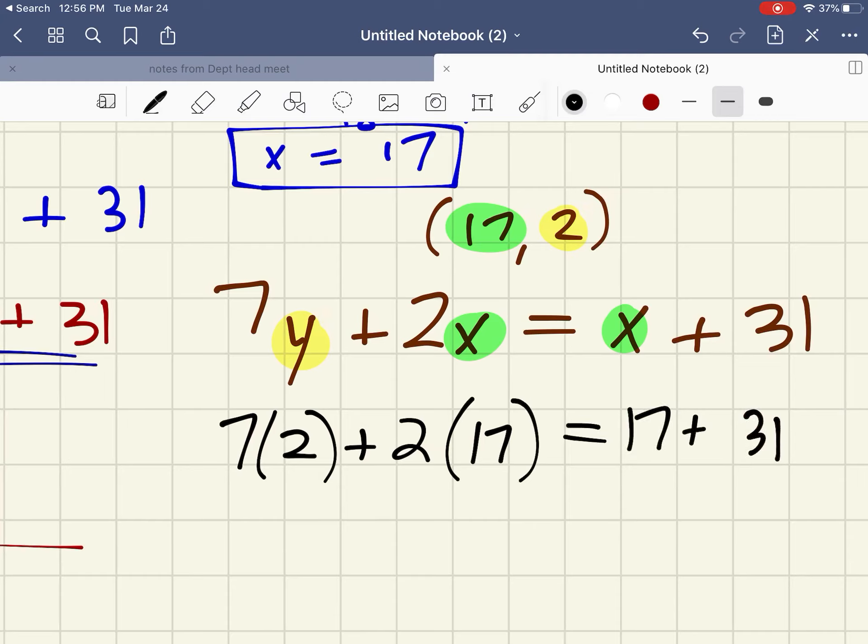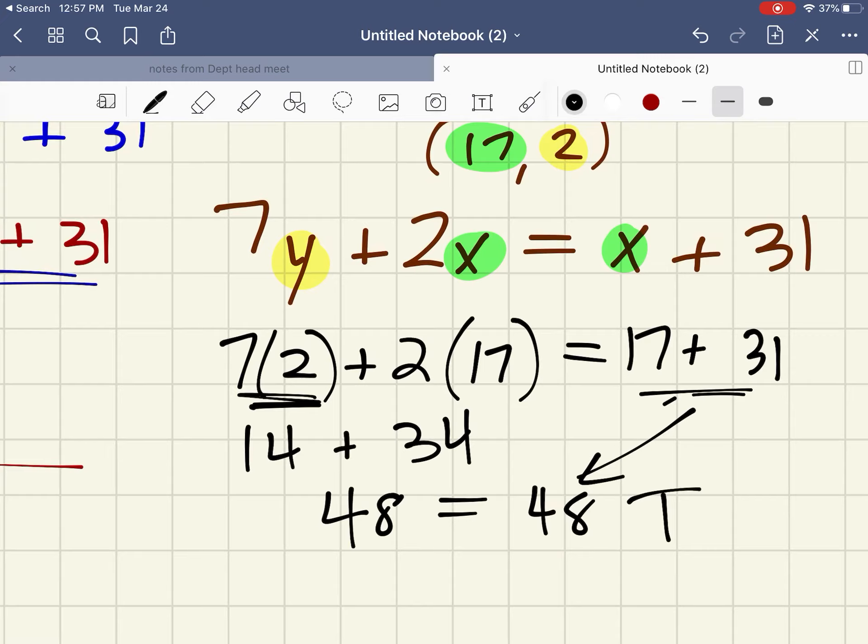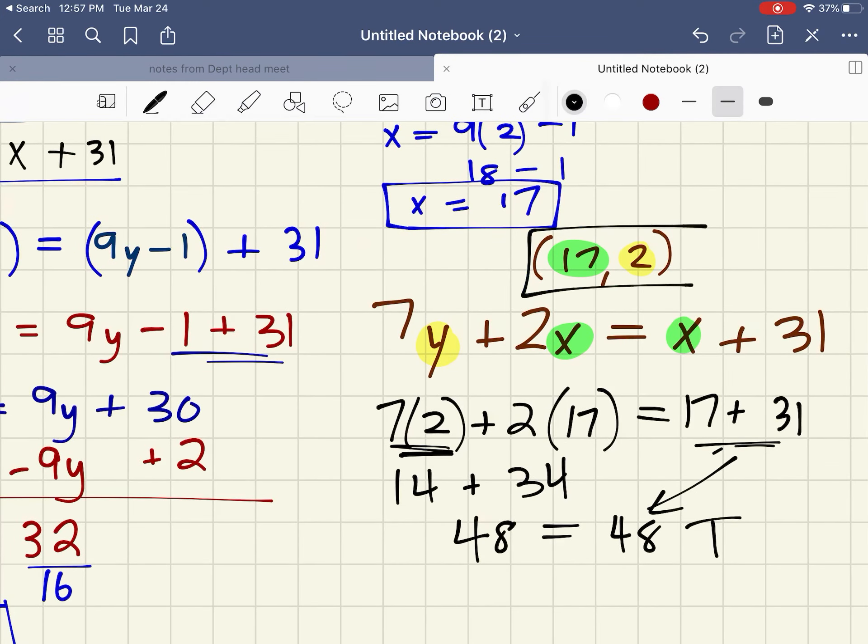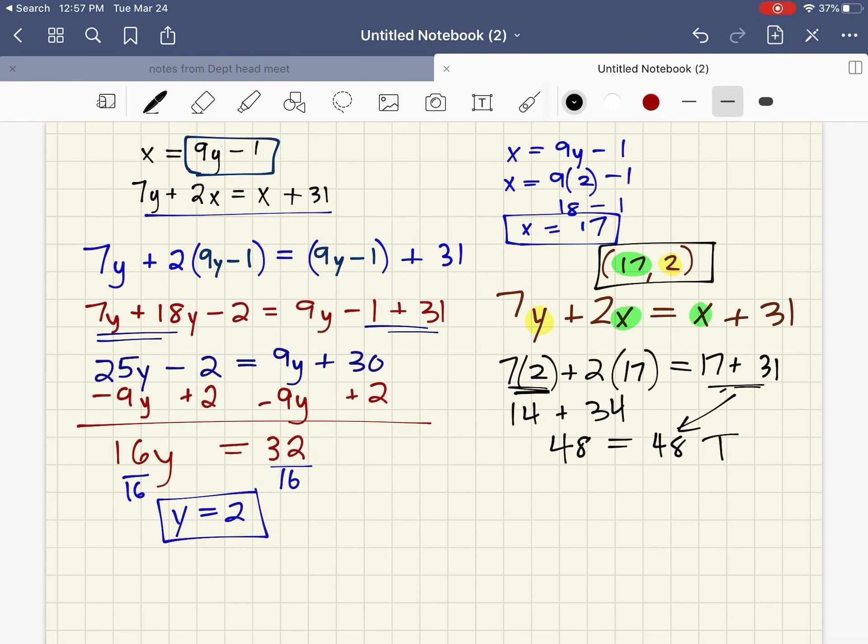17 plus 31. There's 14. That's 34. So this left side of the equation is 48 and the right side of the equation is 48. That is a true statement. So that means that 17 comma 2 is the solution to that system of equations.